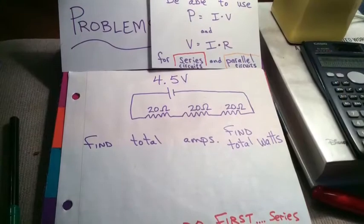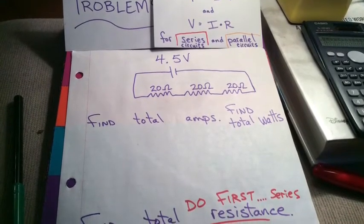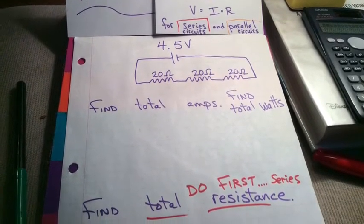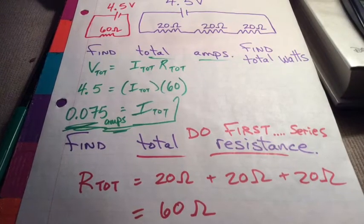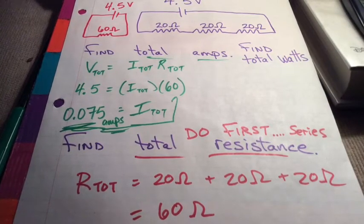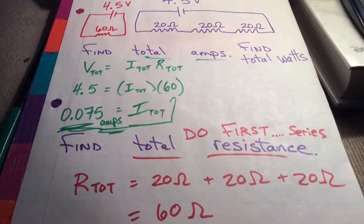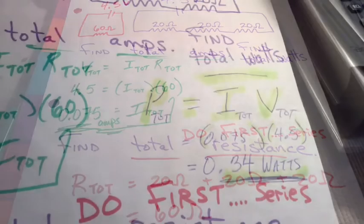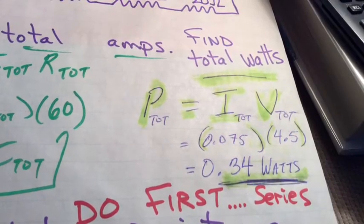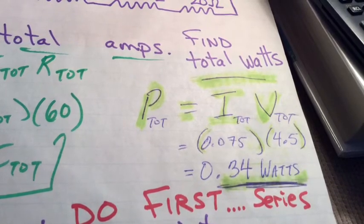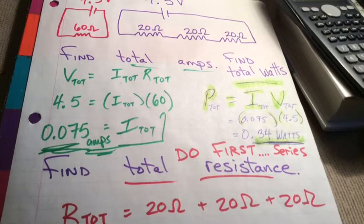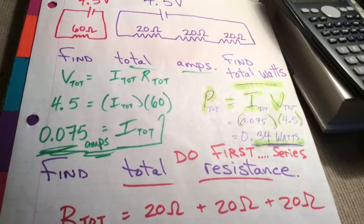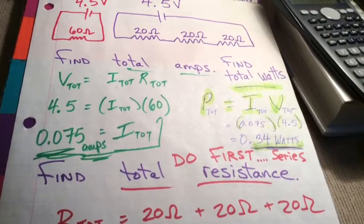For series, you can skip right to the resistance. It really is like one path. You can just add up those resistances to get 60 ohms. If you know total resistance and total voltage, you can find total amps. Then you can use total amps to find your total watts. Now compare that. Look at that. That's in series: a lot less current, a lot less power, more resistance.